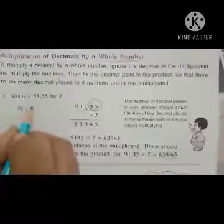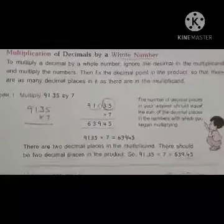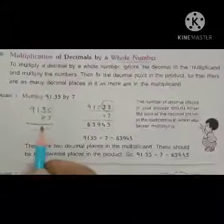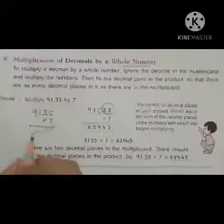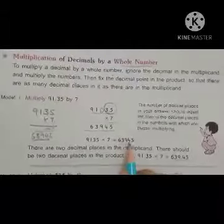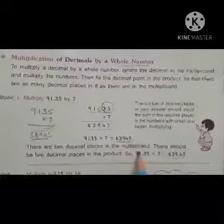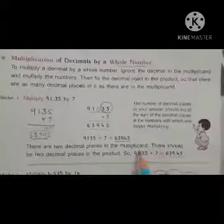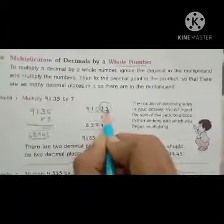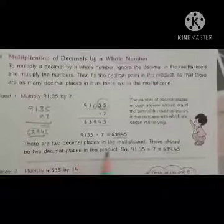Just write 9135 into 7. The product is 63945. There are two decimal places in the multiplicand — after the decimal point, two decimal places. There should be two decimal places in the product also.